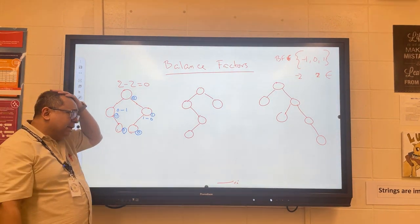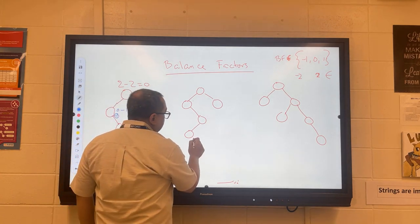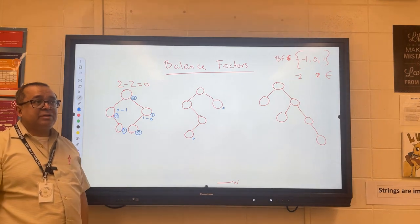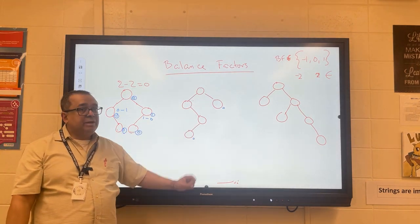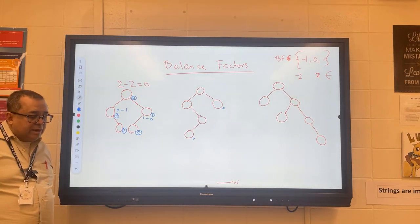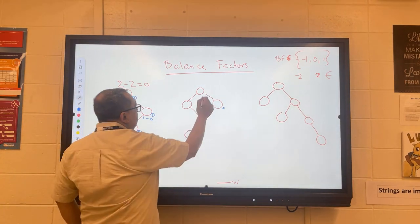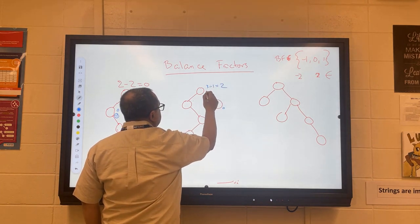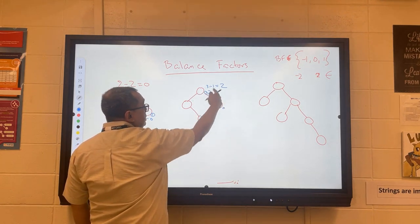Let's now calculate some balance factors for another tree. The leaf nodes have balance factors of 0. The balance factor for the root node is going to be 3 minus 1, which equals 2 — the left subtree has height 3 and the right has height 1.